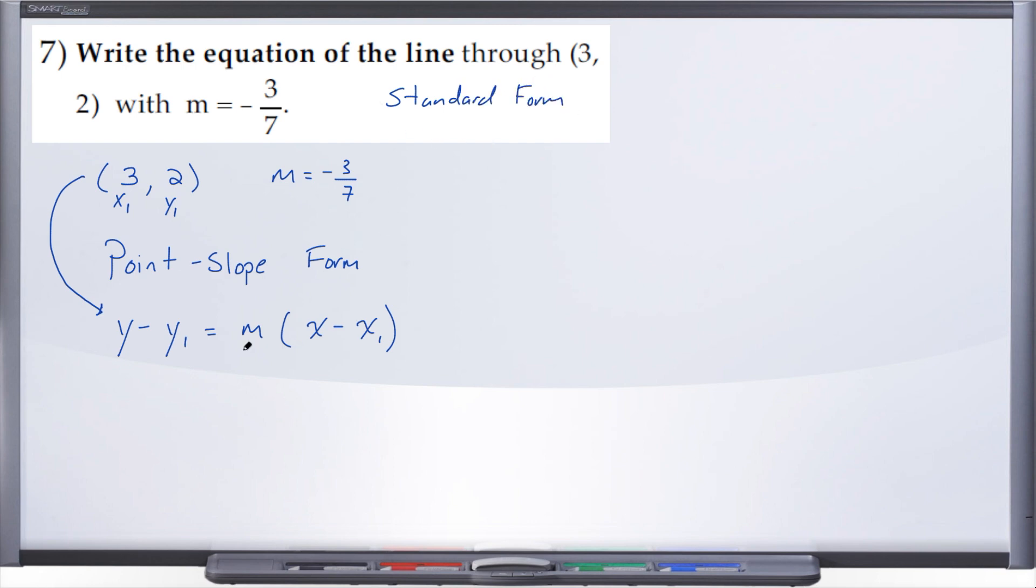All right, so let's go ahead and see what happens here. So y minus y1 equals m, well what's our m? Negative three over seven times quantity x minus, well what's x1? Three. Here we can distribute that negative through so we just get y minus two equals negative three over seven and then x minus three. All right, let's go ahead and clear the fraction here.